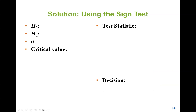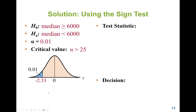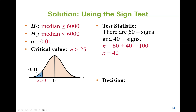We state H0: median ≥ 6,000 (the claim), and HA: median < 6,000. Alpha = 0.01. Since N = 100 is greater than 25, we find the critical value from table 4. For a left-tail test at alpha = 0.01, the critical value is −2.33. We use the Z formula since the sample size is greater than 25.